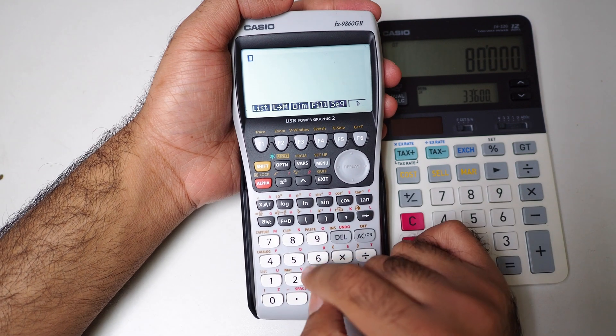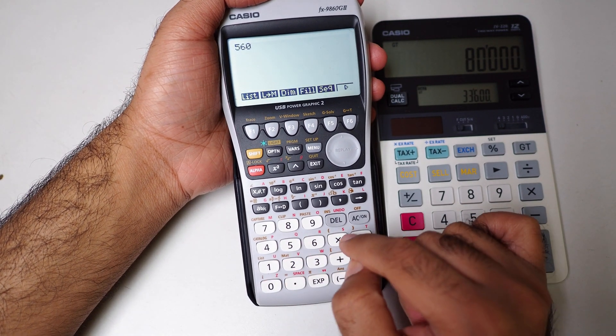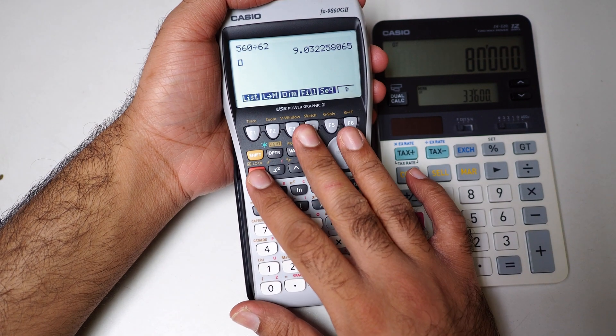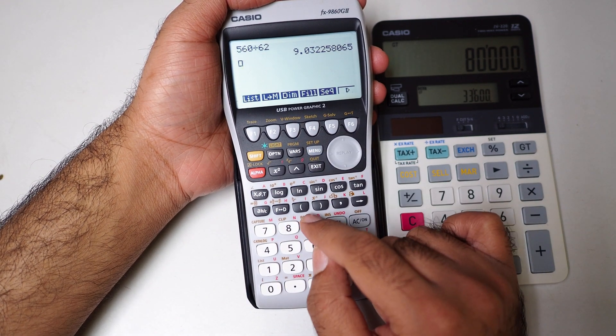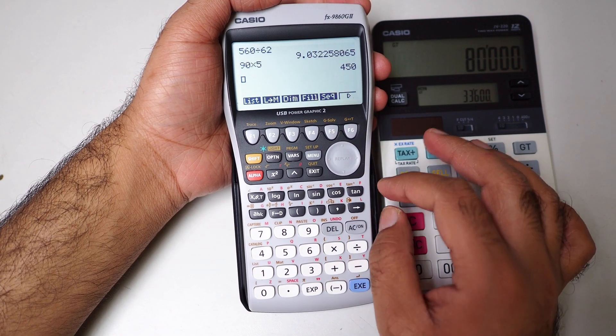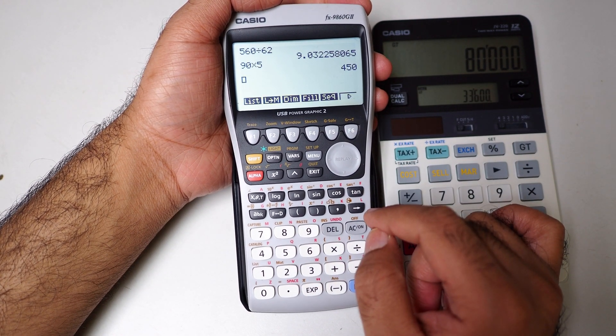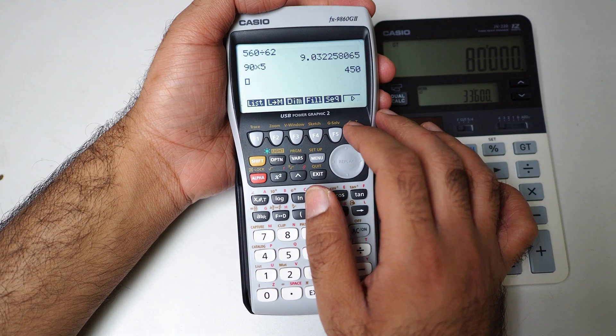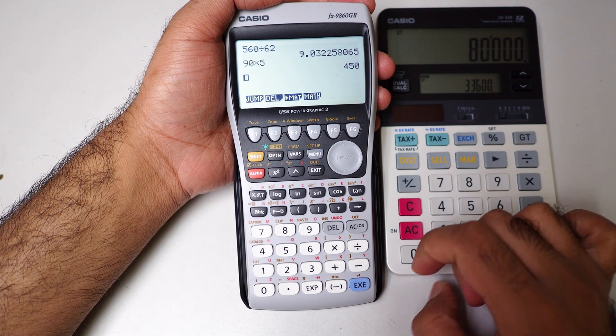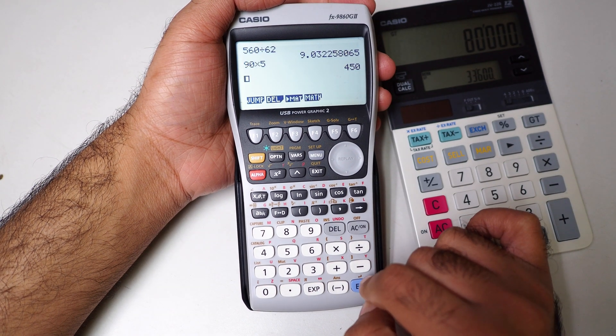So I just press like one, I could do calculation: 500 divided by 60. This one also can do dual calculation, okay, like 900 times 6, I have something like that, 4550. I can do like the answer.